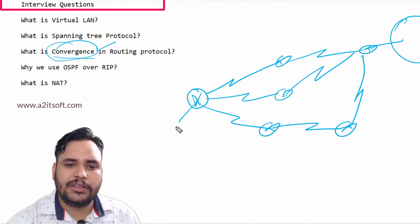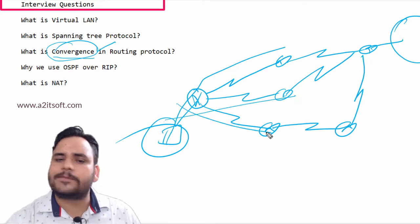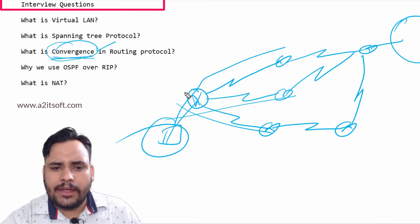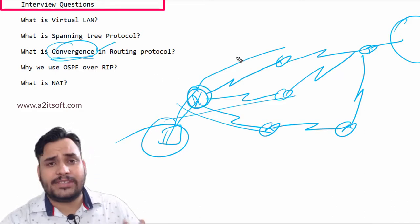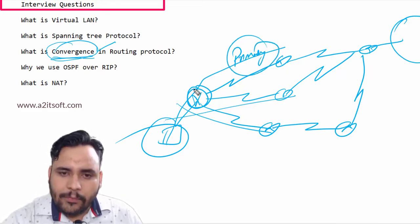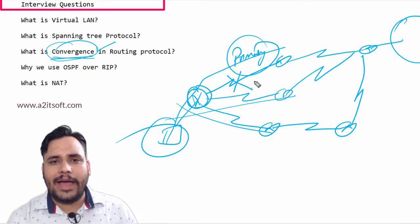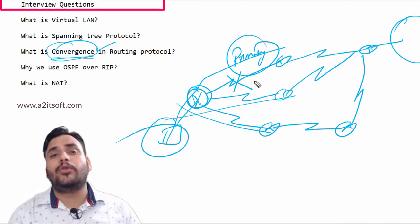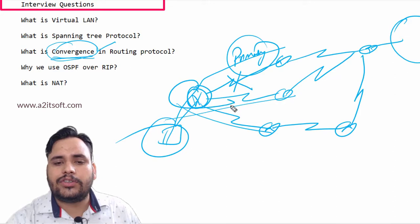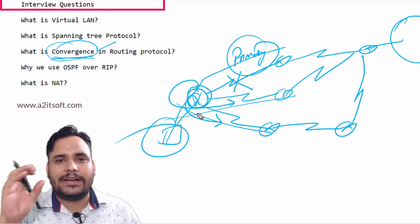This is my destination, this is my source. You can go via multiple paths. By default, router has one best route, for example this is my primary route. When my primary path goes down due to any condition, the router takes some time to find the secondary path. The router will choose the path from these two paths, and at that time it will take some time interval. That time period is known as convergence.